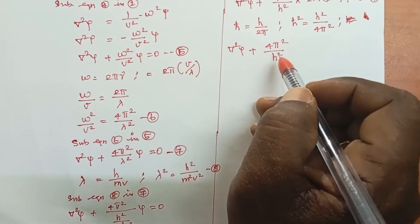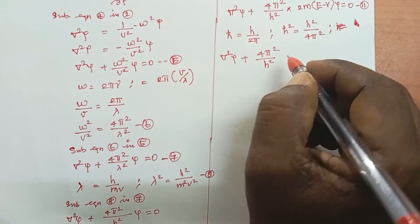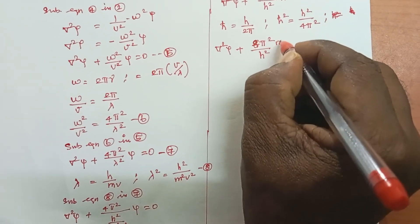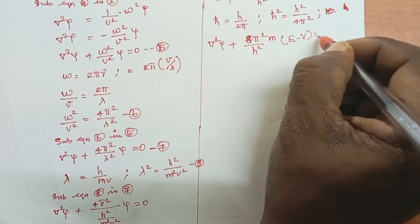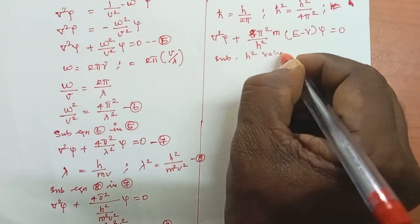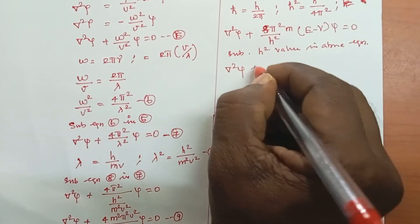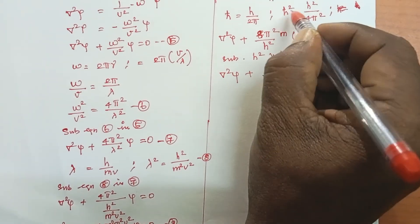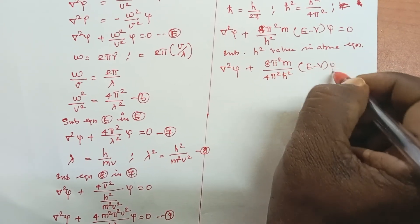This simplifies to ∇²ψ + (2m/ℏ²)(E − V)ψ = 0. Dividing through by −ℏ²/2m: −(ℏ²/2m)∇²ψ + Vψ = Eψ.